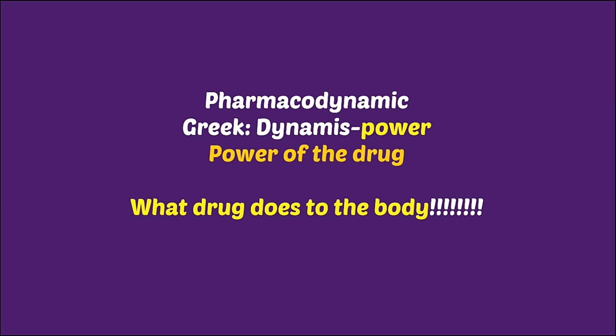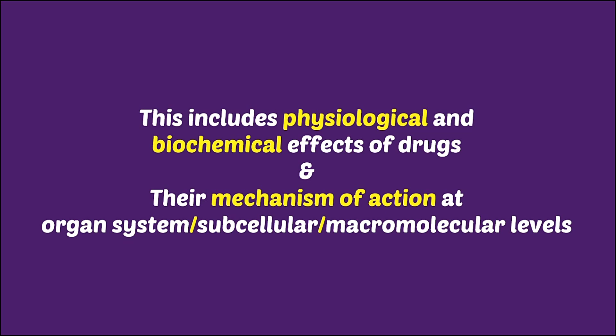Pharmacodynamics — the word dynamic is derived from the Greek word dynamis, which means power. So pharmacodynamics is the power of the drug: what drug does to our body. This includes the physiological and biochemical effects of a drug. Physiological means related to the function of our organ systems, and what these drugs are doing to the physiology of our body. Biochemical effects mean effects on biological molecules — for example, some drugs alter blood glucose levels. Apart from this, there are mechanisms of action at the organ system, subcellular, and macromolecular levels.